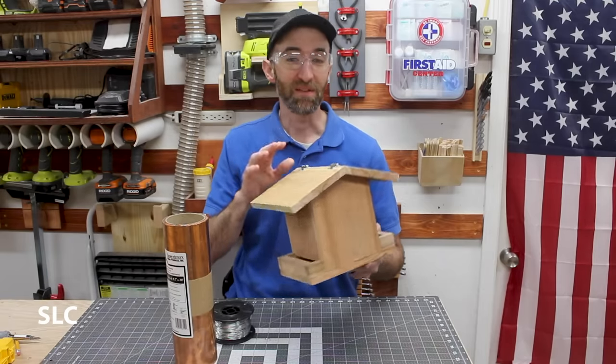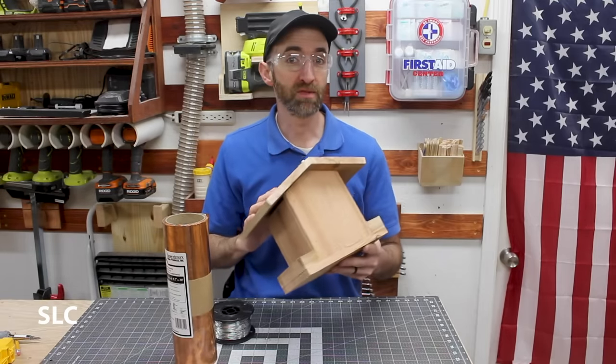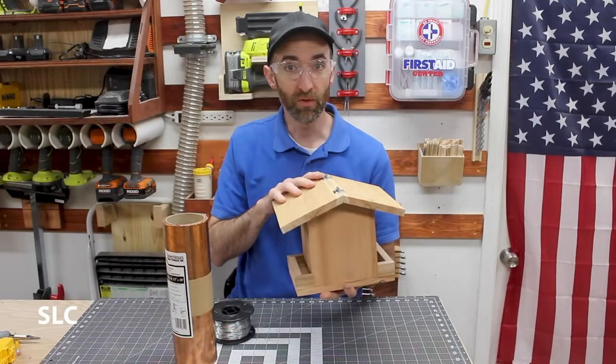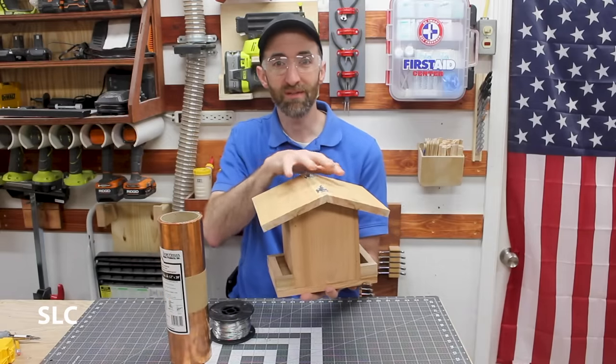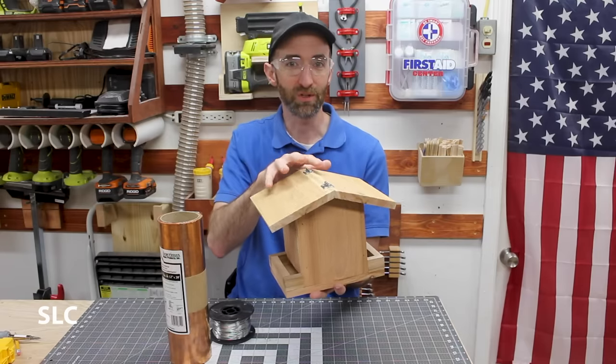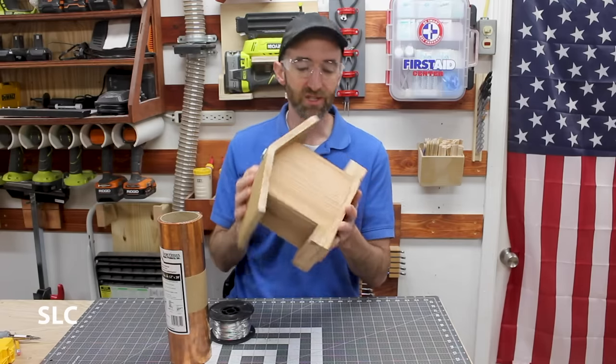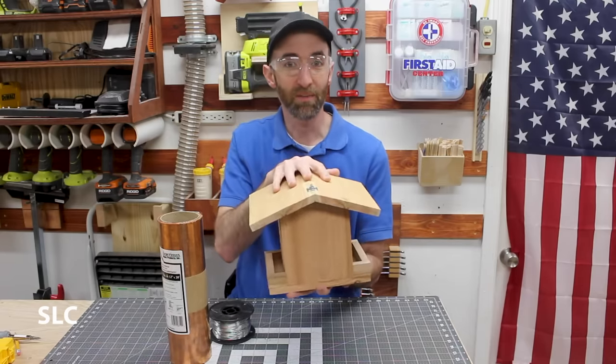Now my bird feeder is finally finished. I have a couple other options you might want to consider if you're going to build this. You can always take some copper flashing, put it across the top, and it'll just give the whole roof a really cool look to it. In my case, I like just a standard wood look, and so that's the way I'm going to keep it.